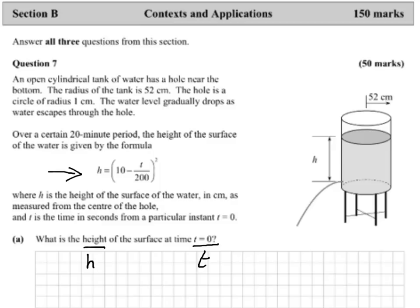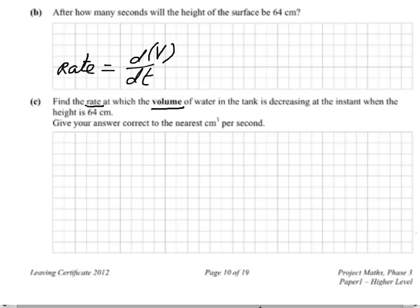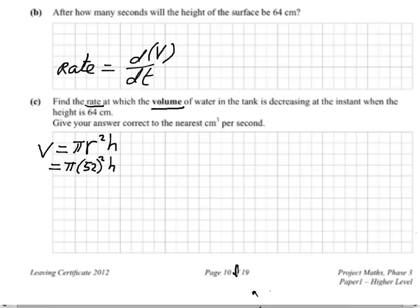We're dealing with a cylinder — specifically a cylindrical amount of water. The cylinder of water has height h and radius 52. Going back to use those values: volume equals pi r squared h. Filling in, r is 52 so it's pi times 52 squared times h. 52 squared on the calculator is 2704, giving volume equals 2704 pi times h.